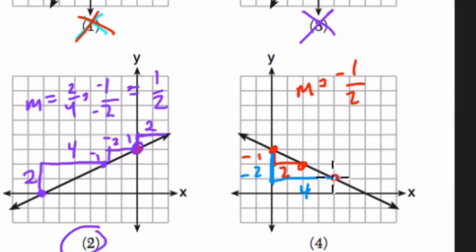Or, if I read backwards, if I go up 2 but back 4, negative 4, that's 2 over negative 4, which is the same thing as negative 1 over 2. Still negative 1 half in the end. So this is a negative slope. That's not what we're looking for.